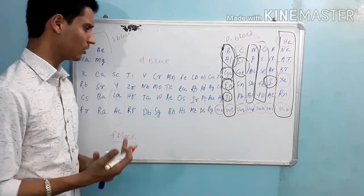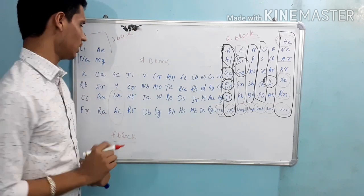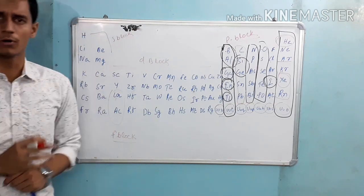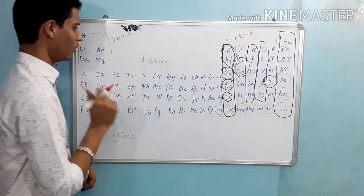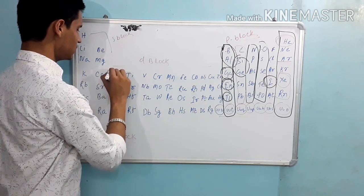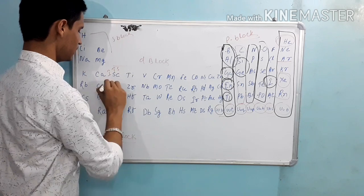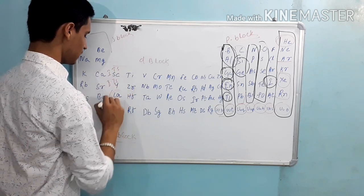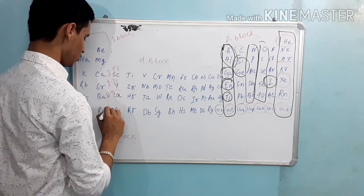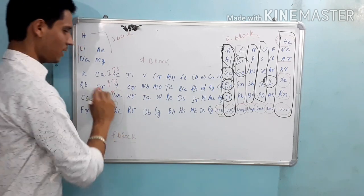The important thing is that you have 4 types of transition series. So let's see: in the first transition series — 1st Ts, 2nd Ts, 3rd Ts, 4th Ts — a type that goes on.